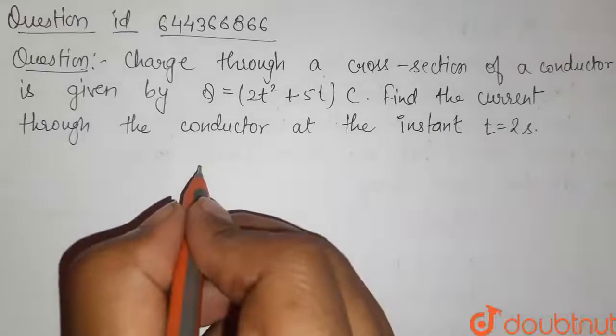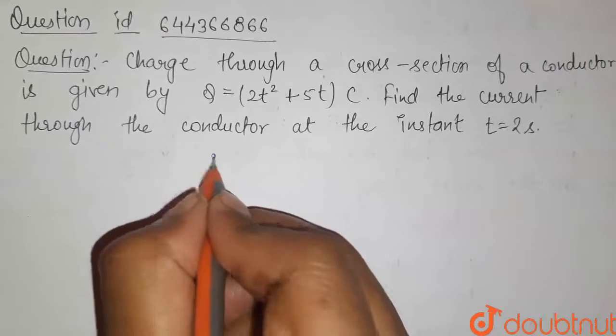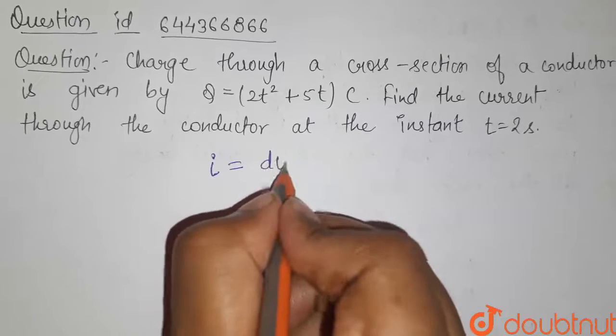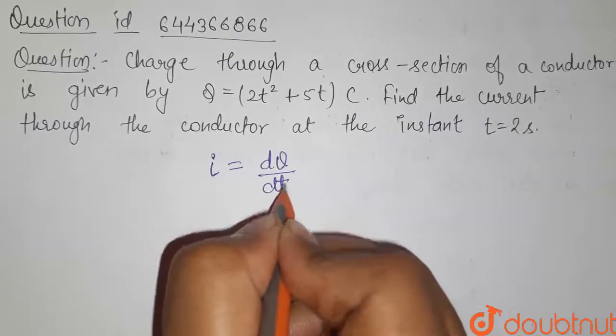We know the current i is given by the rate of flow of charge per unit time, that is dq by dt.